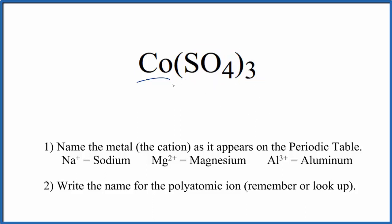Because we have a transition metal and a polyatomic ion, we're going to use these rules here to write the name for Co(SO4)3. First, we write the name for the metal as it appears on the periodic table. Co, that's just cobalt.